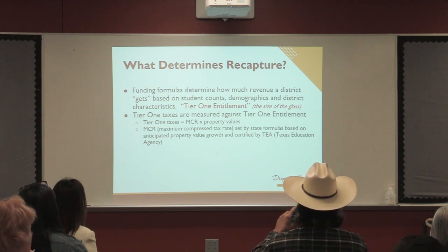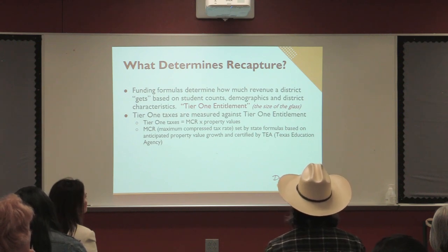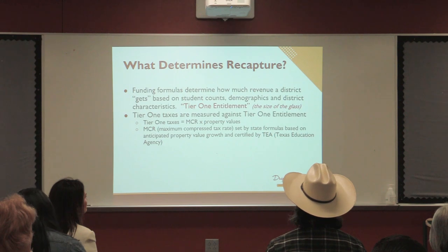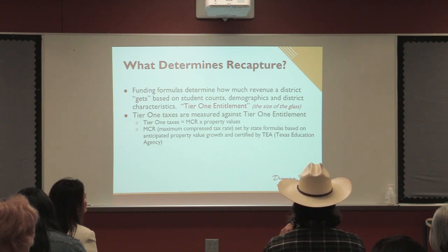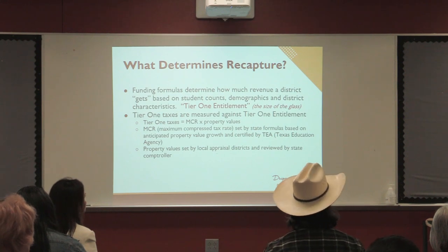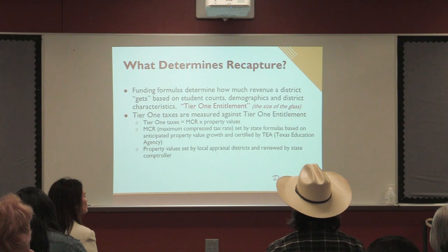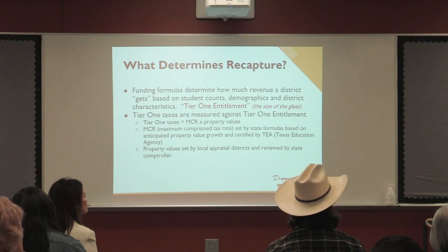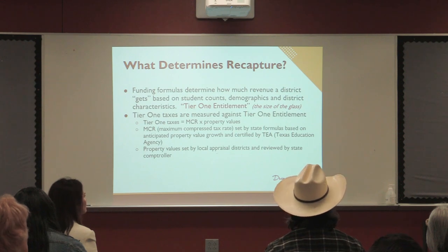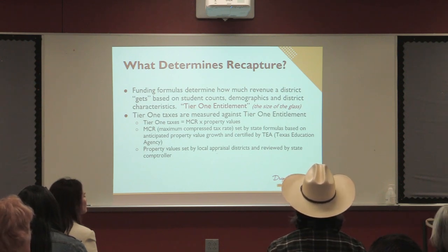TEA certifies the MCR to us on August 1. In April, we get an estimate from our appraisal district of what values will be — we build our budget on that. In July we get certified values and submit those to TEA, which then certifies our MCR. Property values are set by the local appraisal district and reviewed by the state comptroller every other year, who uses sales data to make sure appraisal districts are appraising property at an appropriate level and that the state isn't picking up more of its share than it should.